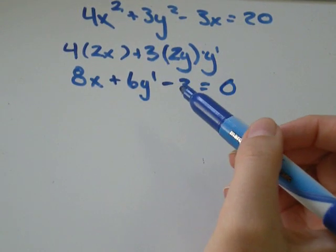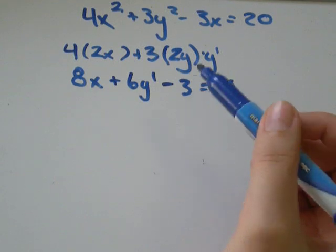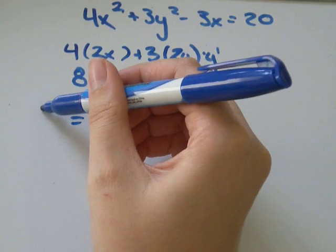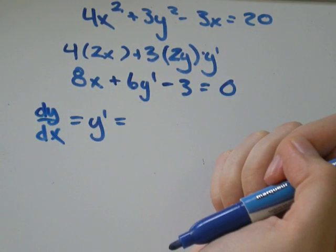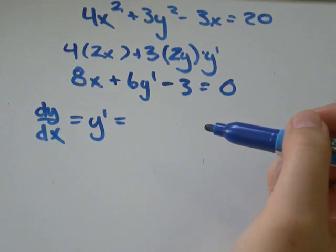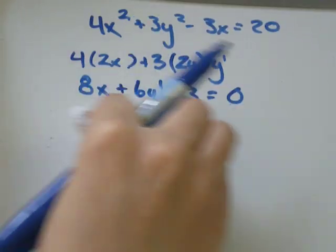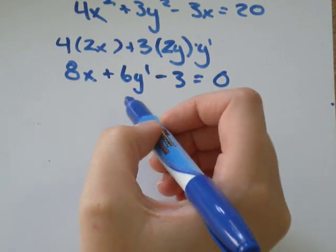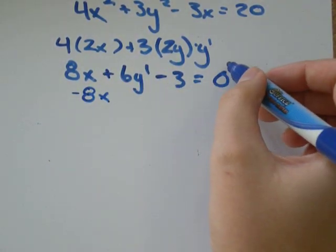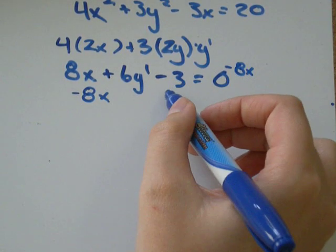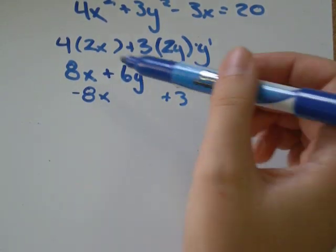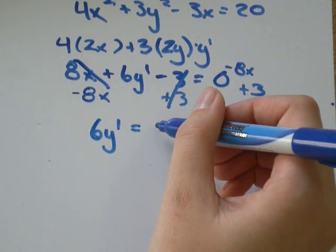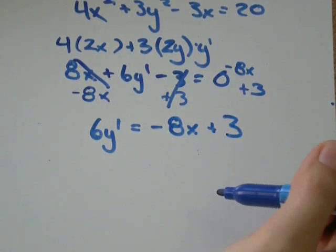So what we have is 8x + 6y' - 3 = 0. We need to solve so that we can say y prime equals, and just FYI, y prime is the same as saying dy/dx. So we want to say dy/dx equals, we need to just rearrange the equation so that we've got all our y's on one side and everything else on the other side. So I'm going to subtract 8x and add 3. So those will cancel out, and I'll be left with 6y' = -8x + 3.